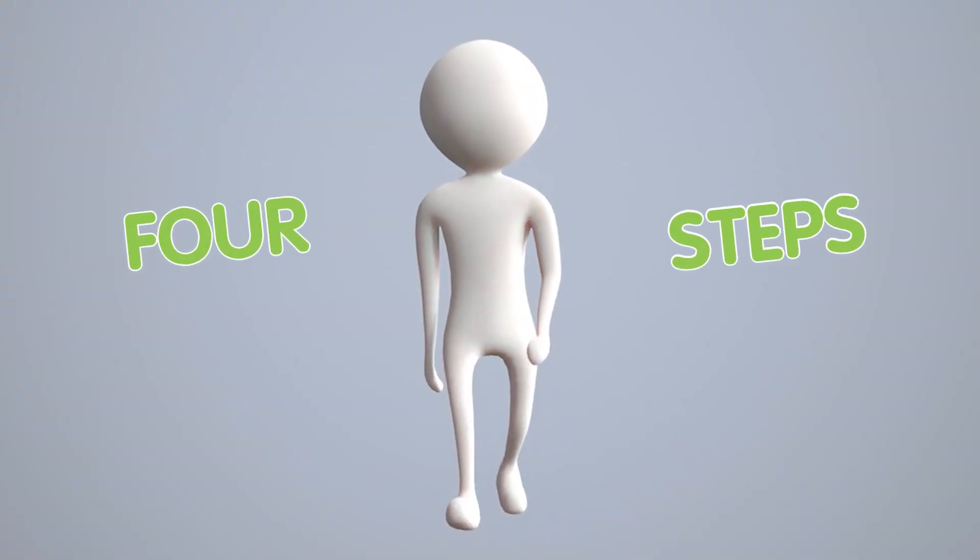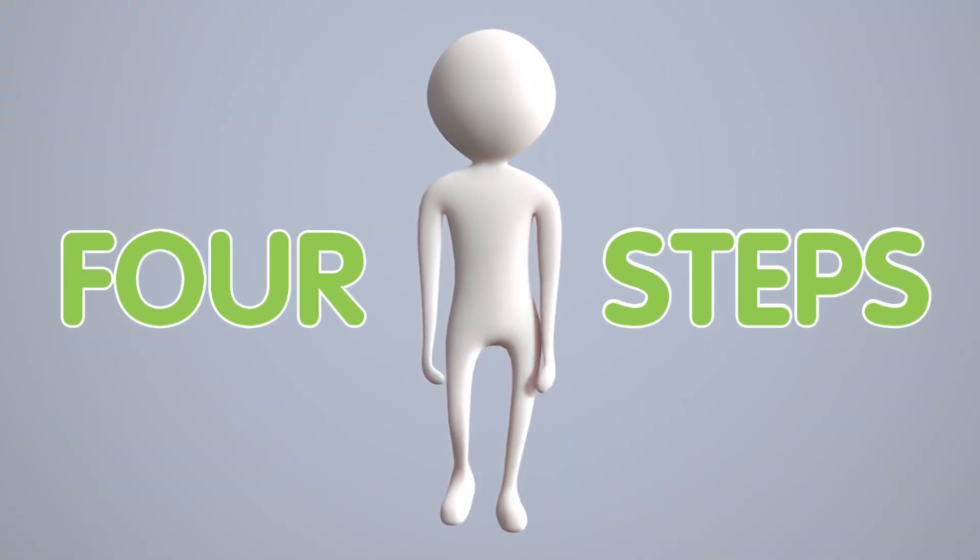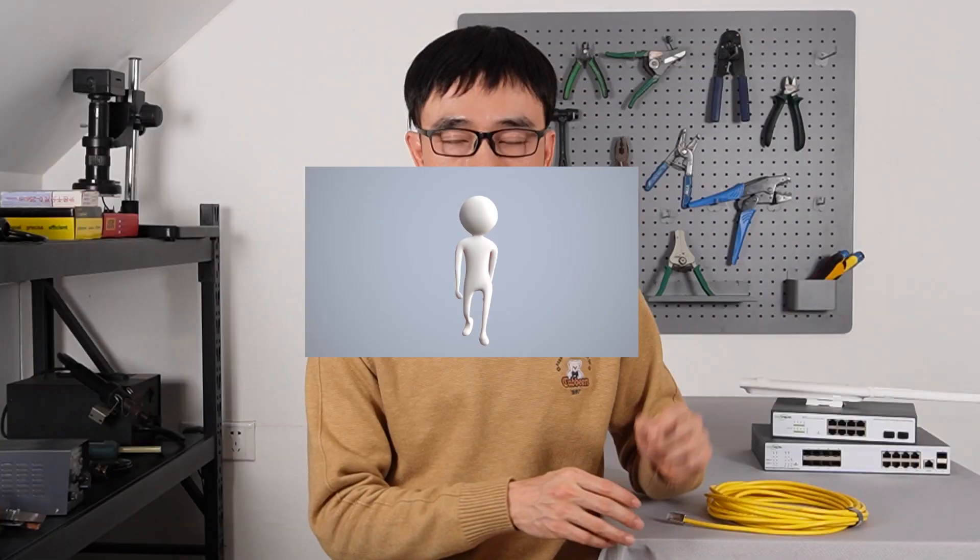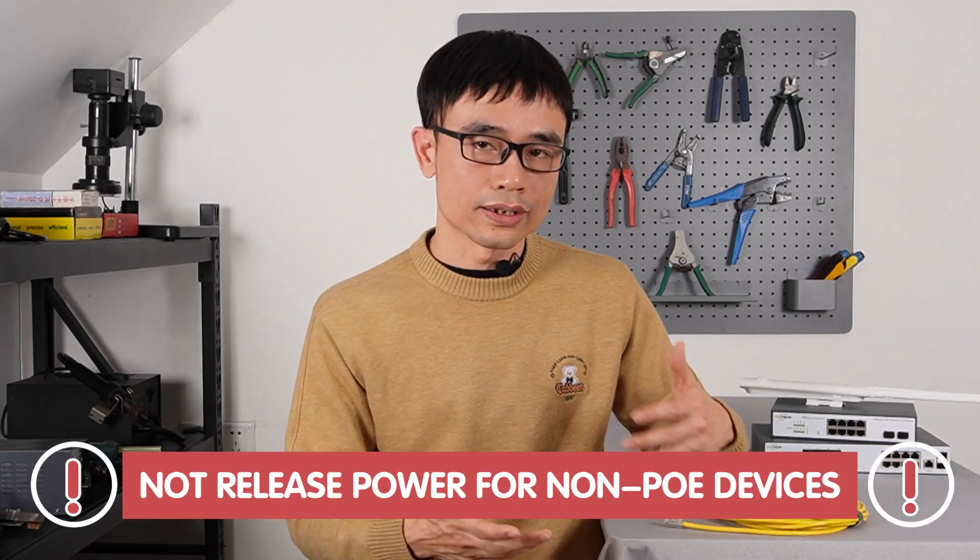What you may not know is there are four steps that the PoE injector and PoE switch need to go through before sending power over the Cat5e or Cat6 Ethernet cable. The first step is verification: you need to verify that your edge device, such as a camera or access point, is also compatible with PoE. If the edge device is not PoE compatible, the PoE injector or switch will not release the power.